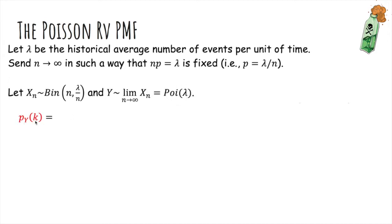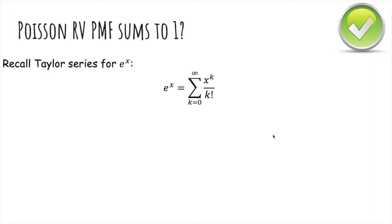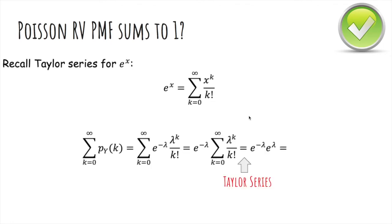The probability mass function of a Poisson random variable is the limit, as n goes to infinity, of this binomial PMF, and you actually end up getting this. So you can look at this if you want. The Poisson random variable also sums to 1, the PMF. You can check this yourself using Taylor series as well.